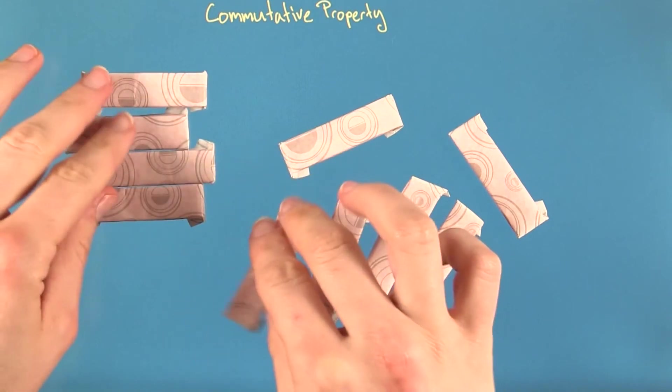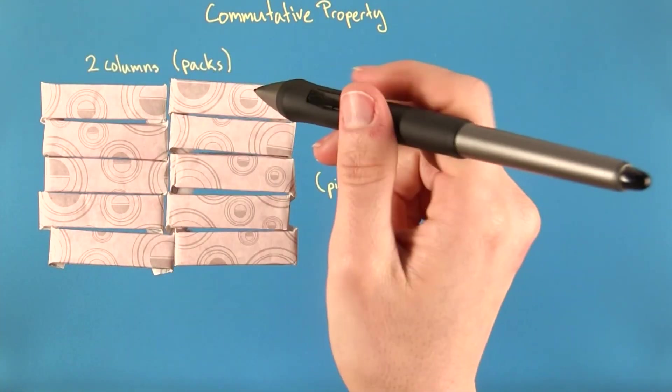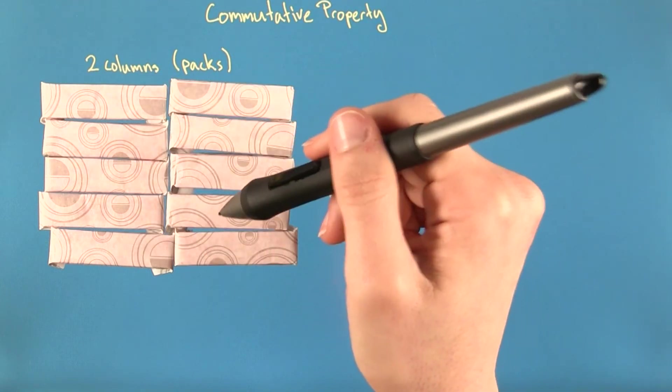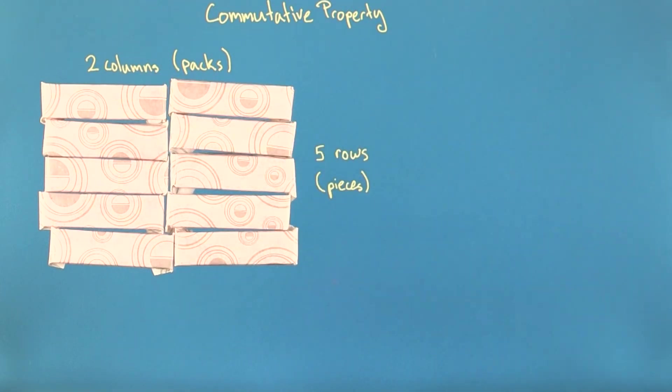I can just rearrange that a little bit, and it'll look like this. I now have two columns of gum, one column for each pack, and five rows of gum, so five pieces in each pack.